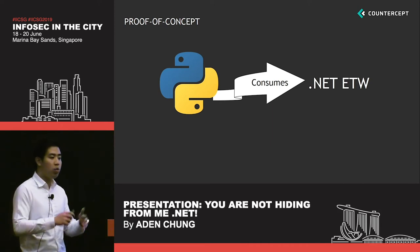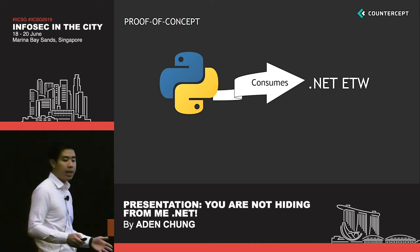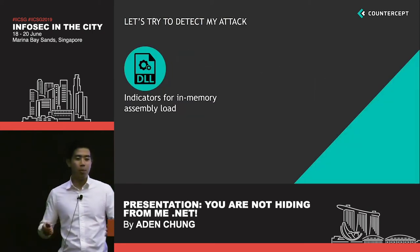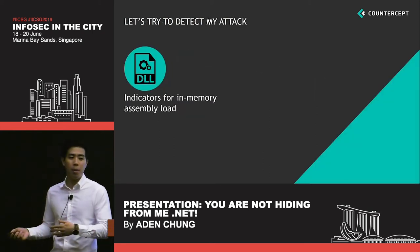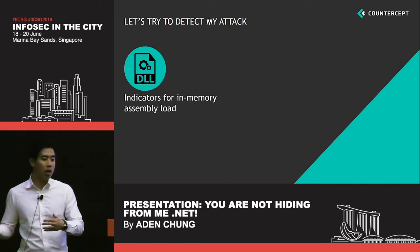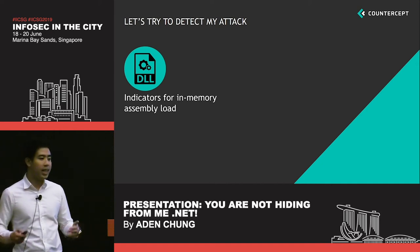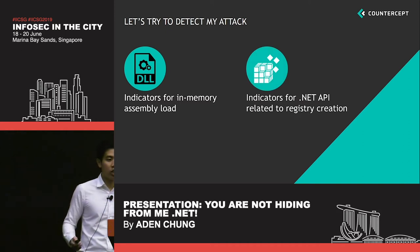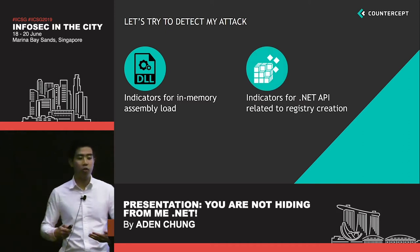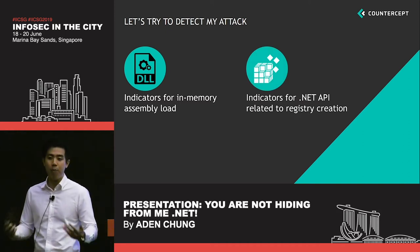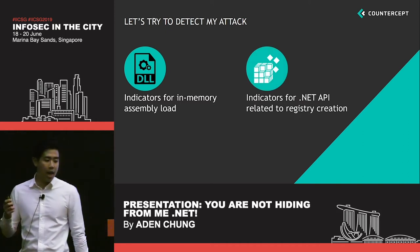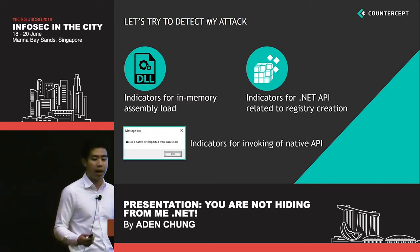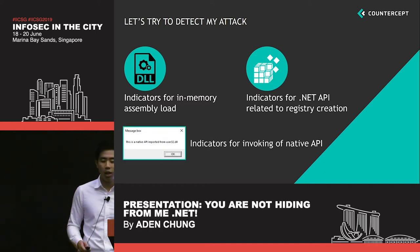With this new level of visibility, let's try to detect the payload I ran in the prior demonstration. Let's try to find indicators related to in-memory assembly loading, indicators related to registry creation through the use of .NET API, and finally indicators related to invoking of native API.